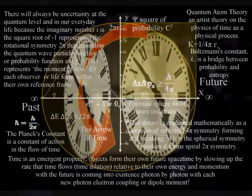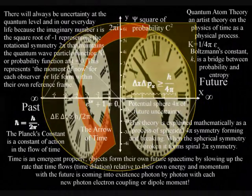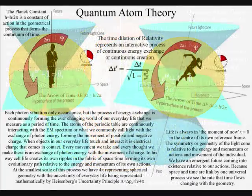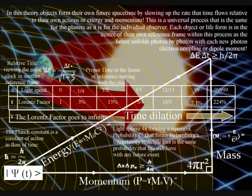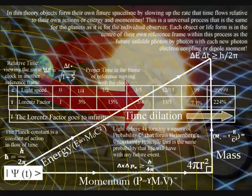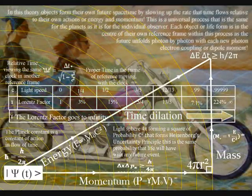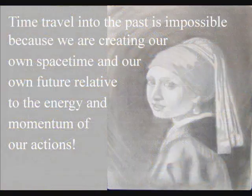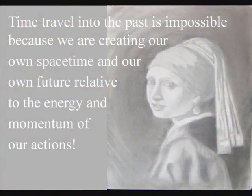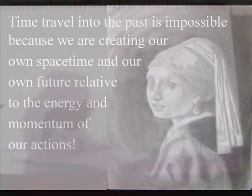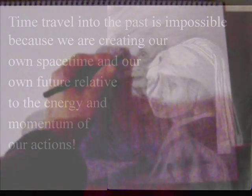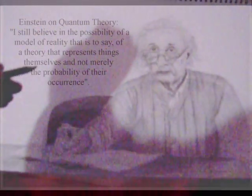In this theory the universe is a continuum of continuous creation, with each object or life-form always at the forefront of the creative process, in the moment of now, in the centre of their own reference frame. Therefore, Professor Muller is right to say there is no going back in time, because we are creating our own time, and our own future, relative to the energy and momentum of our actions.